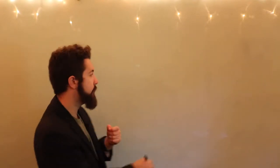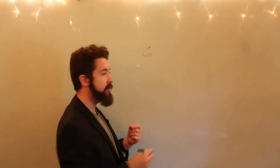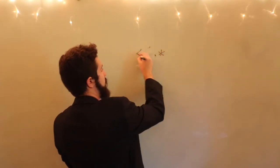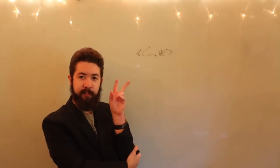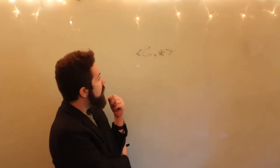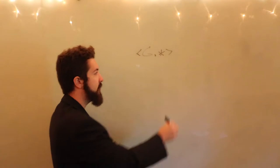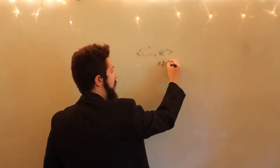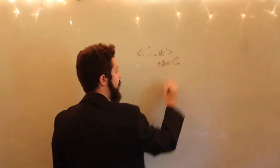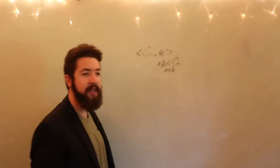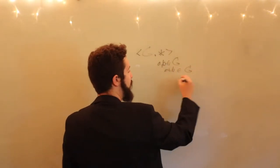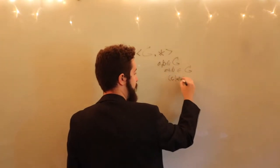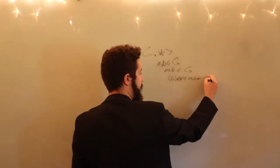Let's assume we have a set G and a binary operation defined on G, we'll call it star. As a tacit assumption, but not one of the explicit axioms of a group, we have that for every two elements, A and B, in the set G, A star B is both defined and it is equal to another element in G. This is what we call closure under the binary operation star.